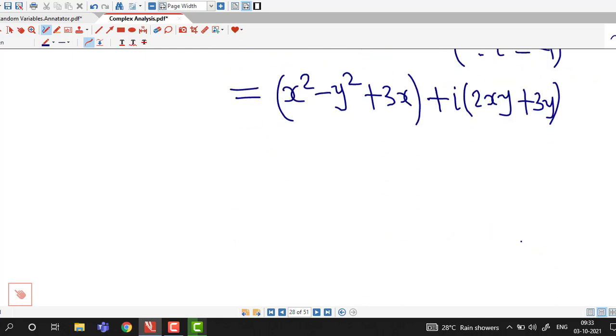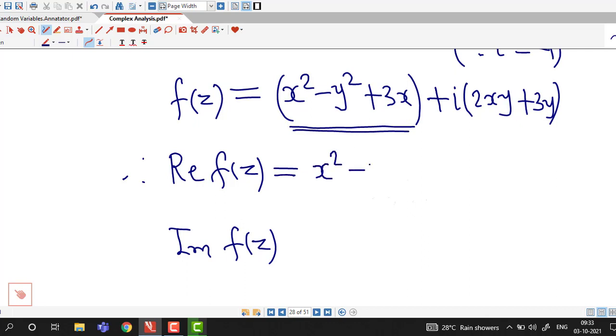We can see our function is in that form now: u plus i into v. We have written our function in standard form f of z equal to u plus iv. Therefore the real part is that portion which is not multiplied with i: x square minus y square plus 3x. And imaginary part is the coefficient of i: 2xy plus 3y.